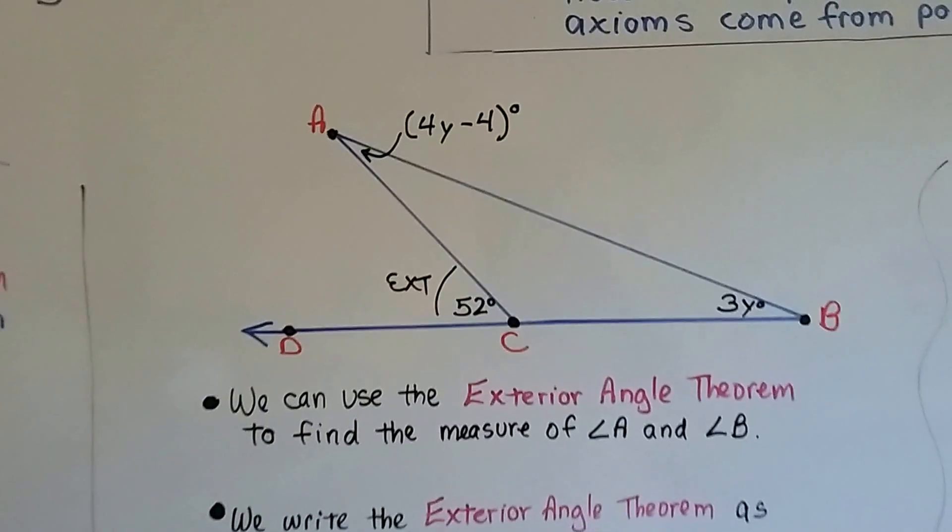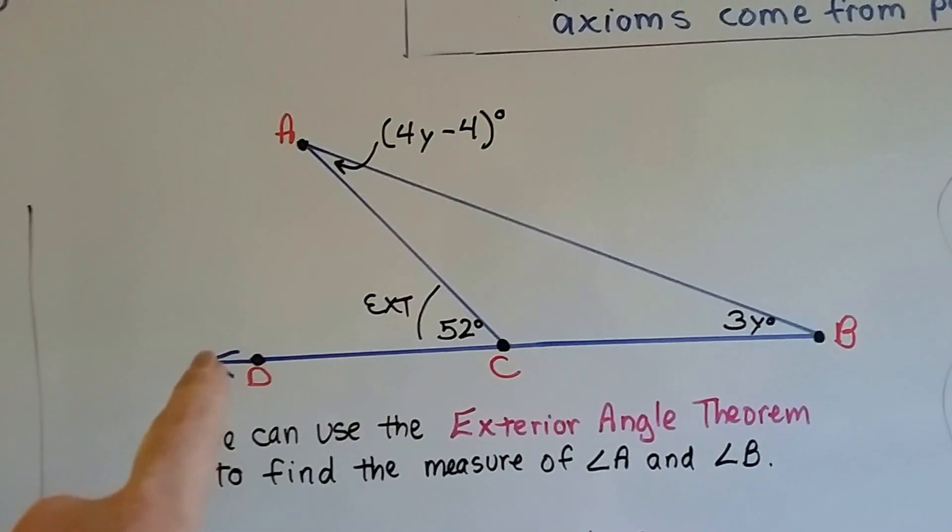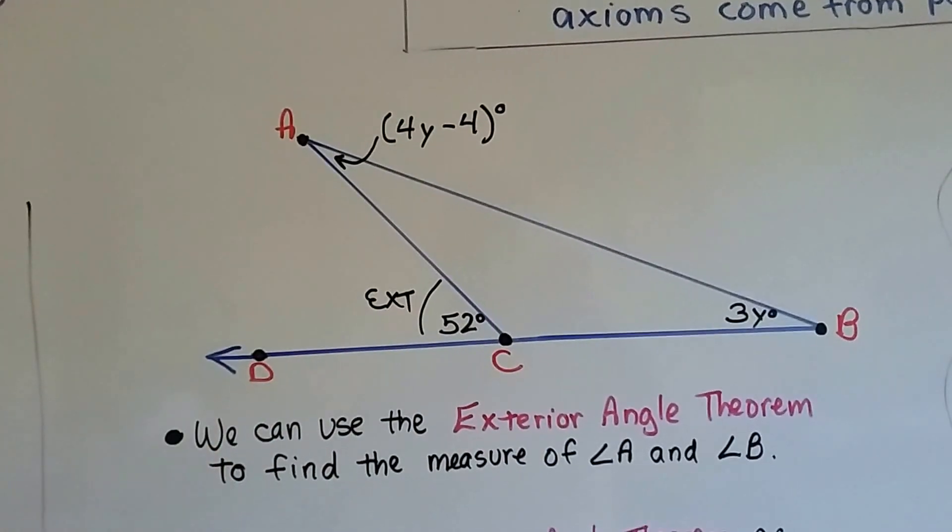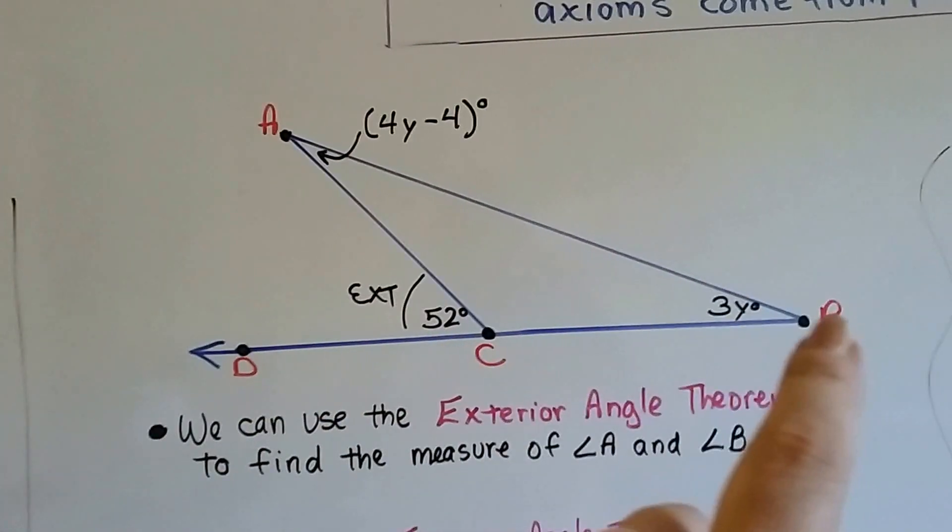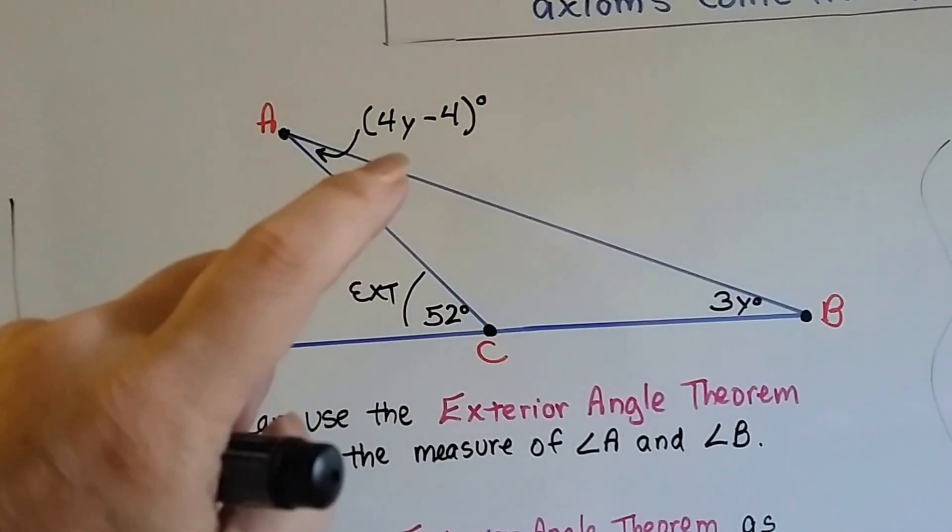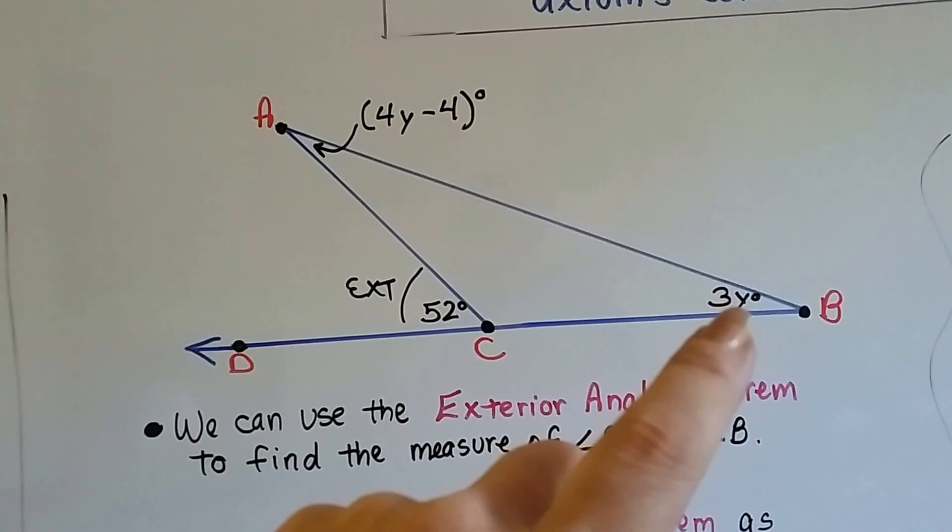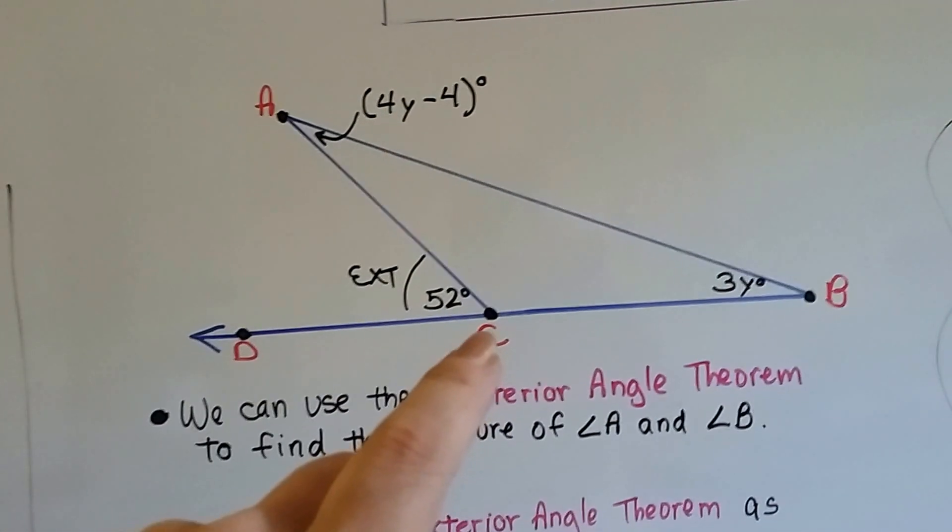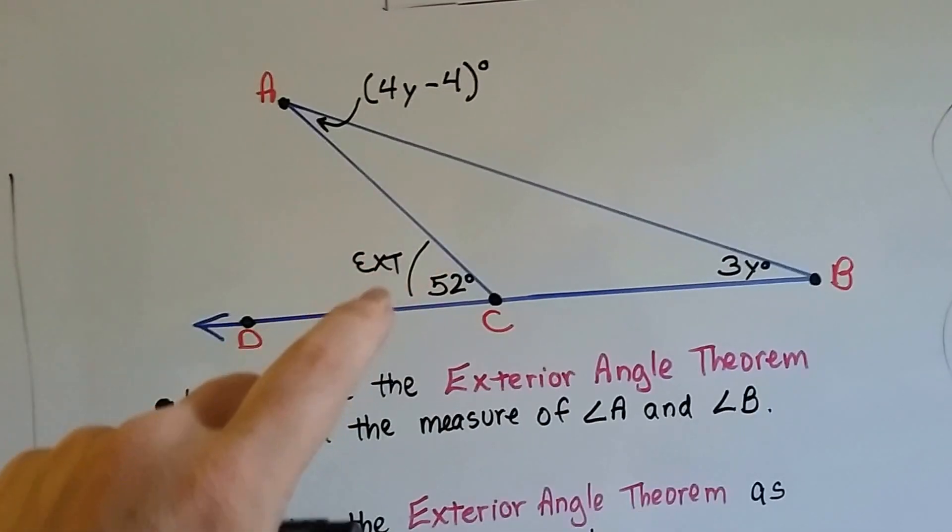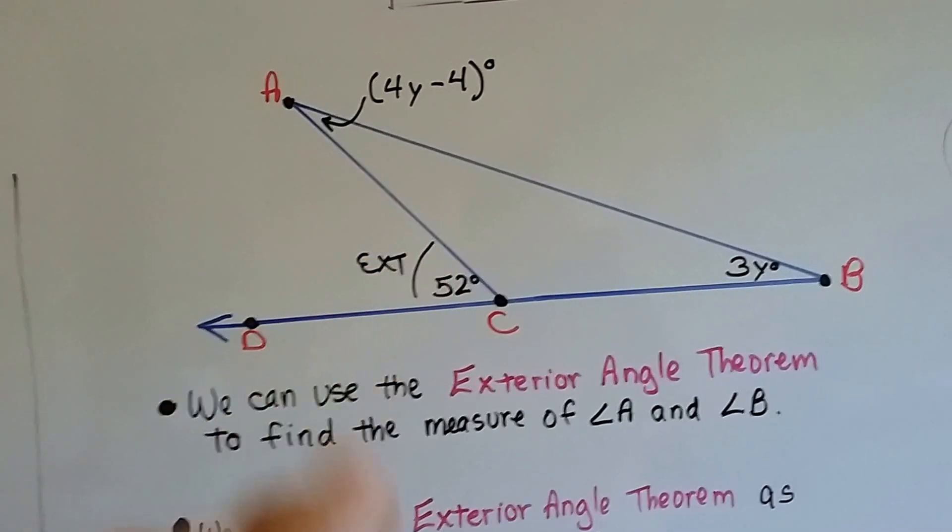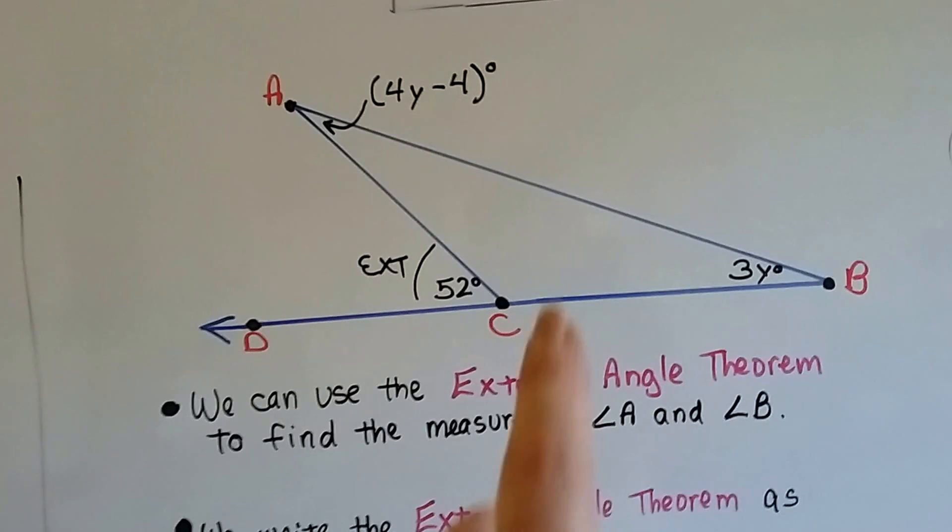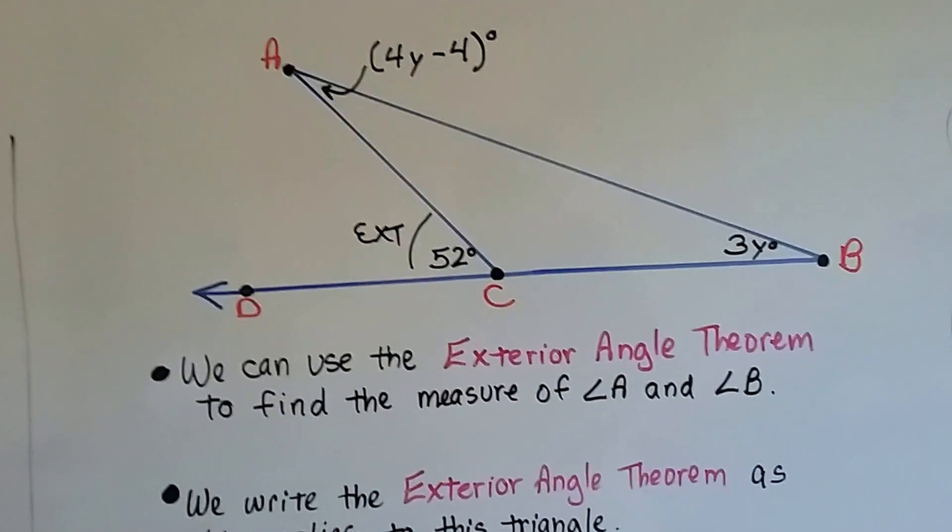We can use the exterior angle theorem to find the interior measures of a triangle. Let's do that. So here's our triangle. You can see I've extended the base out past point D. And we've got A, B, and C. And the measure of angle A is 4y minus 4 degrees. The measure of angle B is 3y degrees. And the measure of ACD, this is the exterior measure here, is 52 degrees. We're not told what the interior C is.